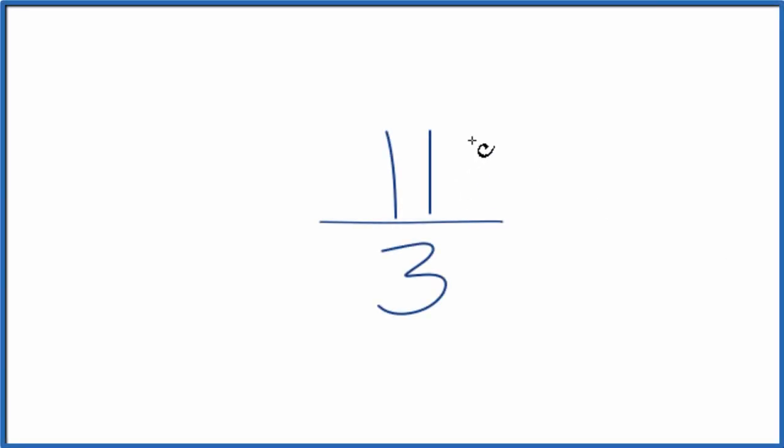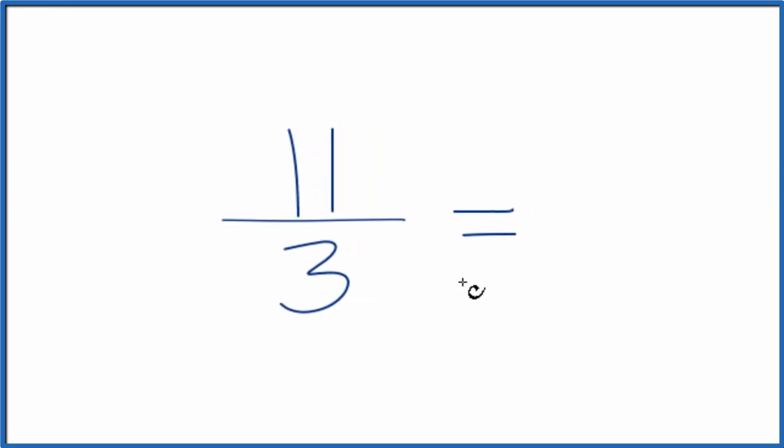If you're asked to simplify the fraction 11 thirds, here's how we can do that. So what we want to do is find another fraction that's equivalent, that's equal to 11 over 3. It's just that we've simplified it or reduced it to its lowest terms.